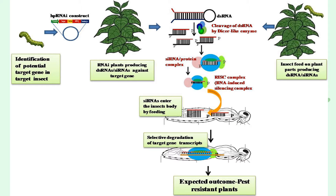This is the illustration of how silencing of the target gene in the insect pest happens. As we see in the right part of the illustration, the insect feeds on plants producing double-stranded RNAs or small interfering RNAs. On the left part of the illustration, the potential target gene in the target insect is identified and the hairpin RNAi construct is designed. The RNAi plants produce double-stranded RNAs or small interfering RNA against the target gene. When the double-stranded RNA forms, it is cleaved by a Dicer-like enzyme to form small interfering RNA. Next, small interfering RNAs enter the insect body by feeding, causing selective degradation of target gene transcripts. So, the expected outcome is pest-resistant plants.